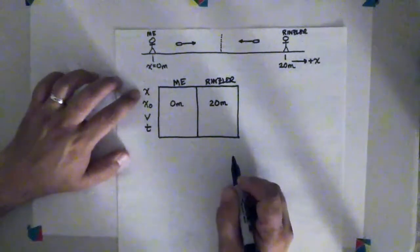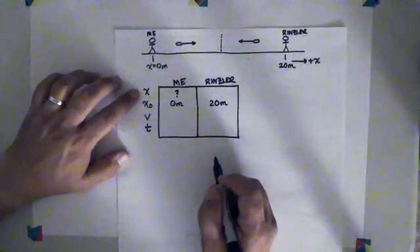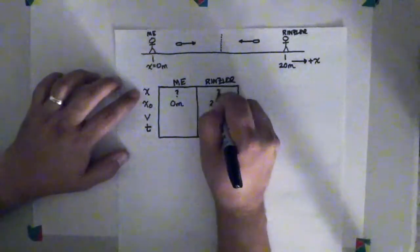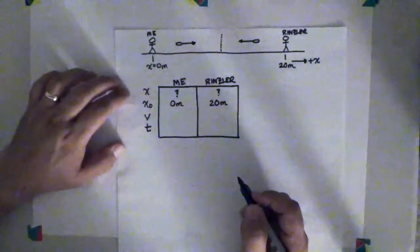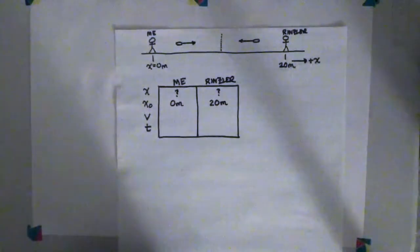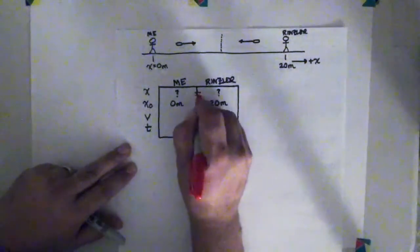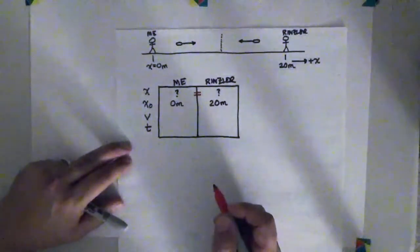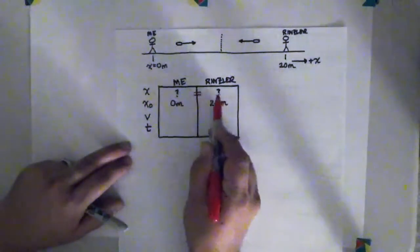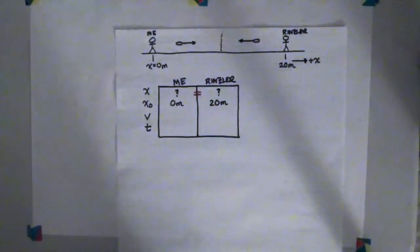What's the final position of my disk? Well, we don't know. That's one of the things that we're asked to find, so I'm going to put a question mark there. The final position of Rinsler's disk, we don't know, so I'm going to put a question mark here. But this is a point where you should have an aha moment, a realization. The problem asks you, when do the two disks collide? What that means is that the position of my disk and the position of Rinsler's disk at the end of the problem are the same. To indicate that, I always draw myself an equal sign right there in the middle of my kinematic table to imply that these two values, to remind me that these two values are going to be exactly the same at the end of the problem.